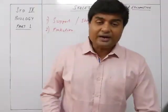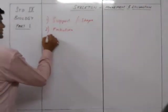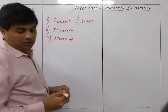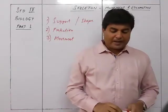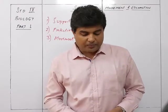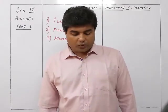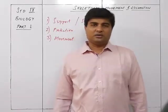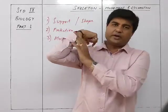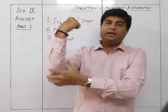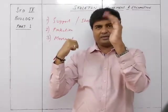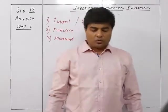The third function is movement. Many bones are joined to each other in a manner that one bone can be moved on another. These movements are brought about by muscles which originate on one bone and are inserted on another. For example, muscles expanding and contracting allow the hand to fold — all these movements take place because of the skeletal system, that is the bones.